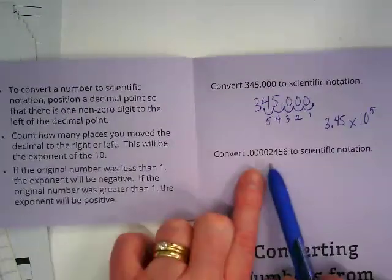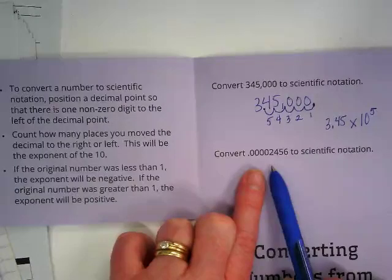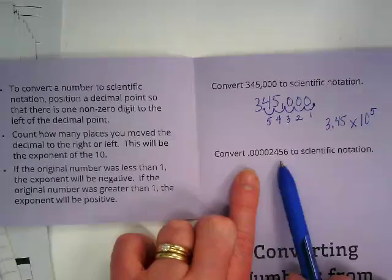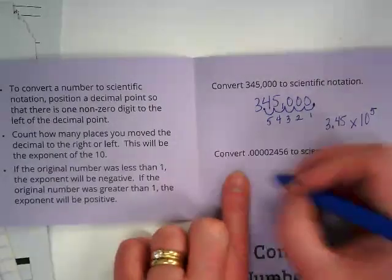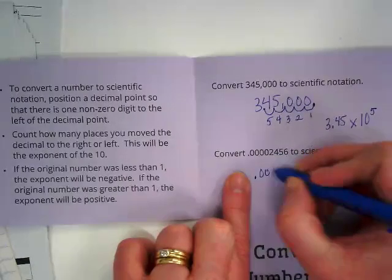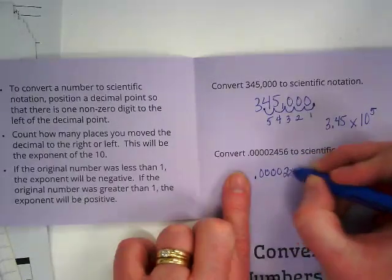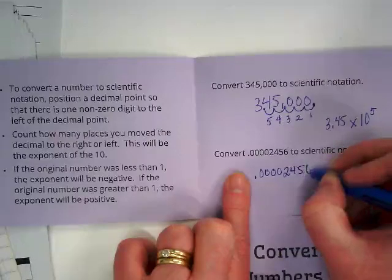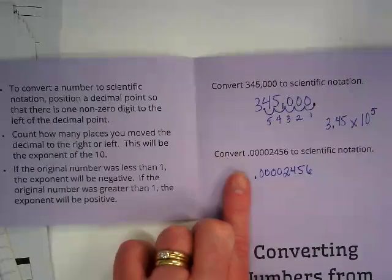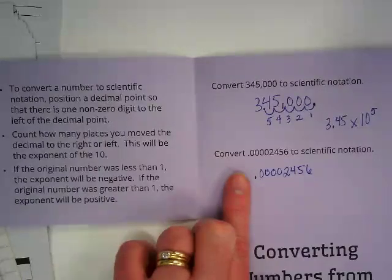But let's do a different number. This one is less than one, isn't it? It's a lot less than one. Look at all of those decimal places over. We want to get the decimal. Let's first rewrite it. How many zeros? 1, 2, 3, 4, 2, 4, 5, 6. We want to get the decimal with one number to the left that's not a zero.